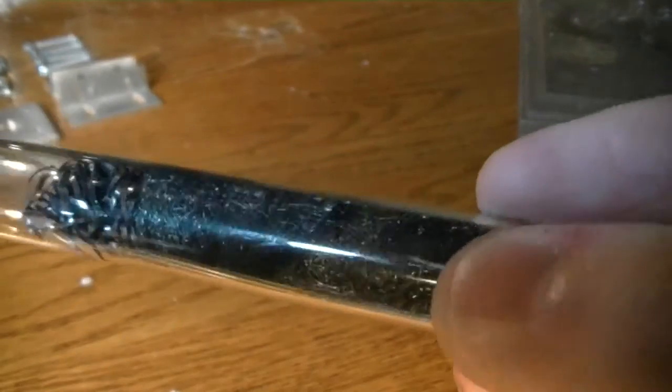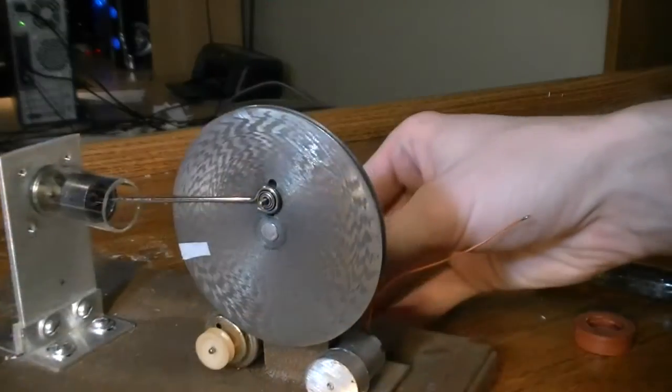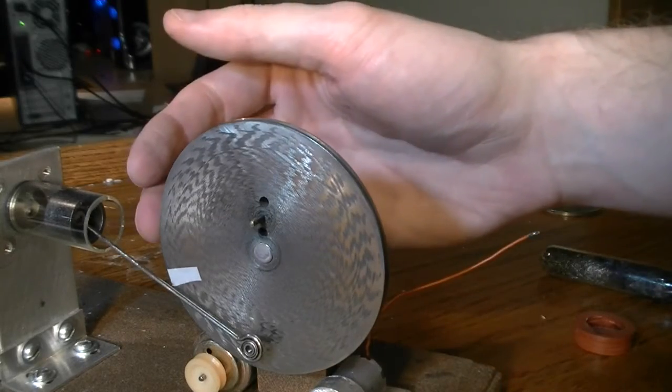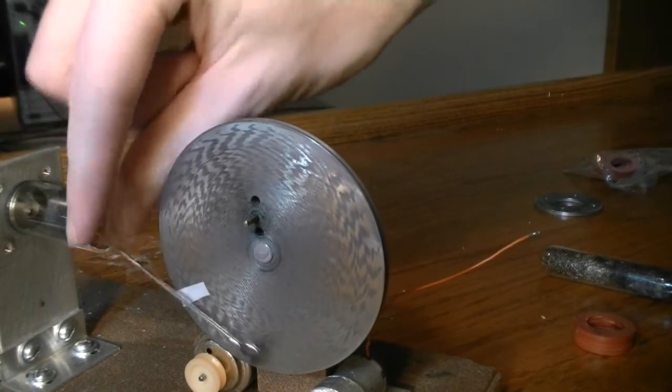Too much air in the Pyrex test tube will slow the engine down. Let's take a look at the flywheel. To take off the flywheel we need to remove this graphite piston.